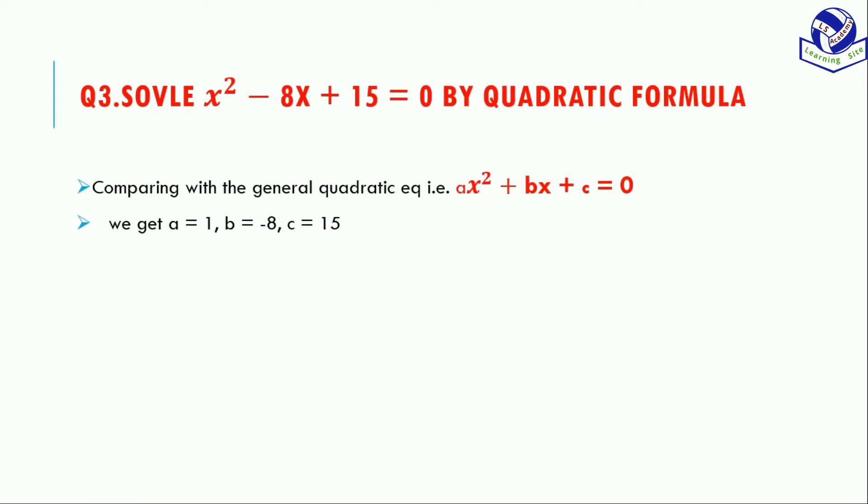In the general quadratic equation we have +c, and in the question we have +15, so c = 15. Now we use the quadratic formula: x = (-b ± √(b² - 4ac)) / 2a.